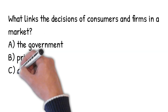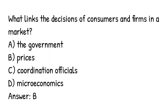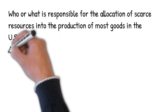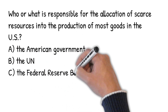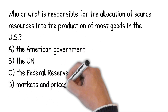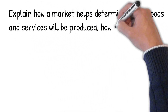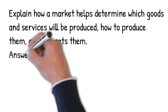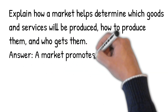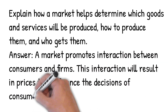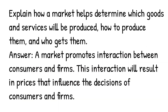What links the decisions of consumers and firms in the market? Prices. What is responsible for the allocation of scarce resources into the production of most goods in the U.S.? Markets and prices. A market promotes interaction between consumers and firms, and this interaction results in prices that influence the decisions of consumers and firms.